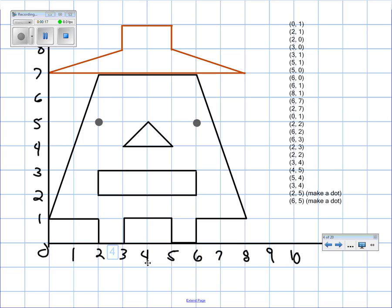And we were given these points that you see off to the right here: 0, 1, 2, 1, 2, 0, 3, 0, 3, 1, 5, 1, and so on and so forth. We were given these points, and we were told to plot them.